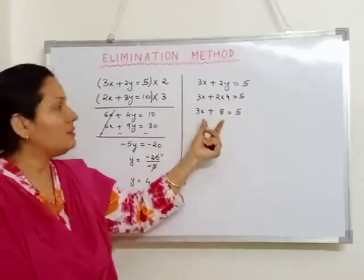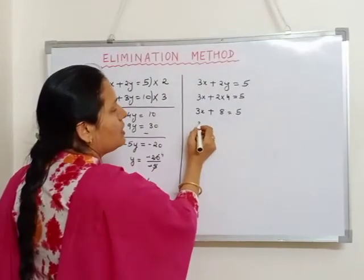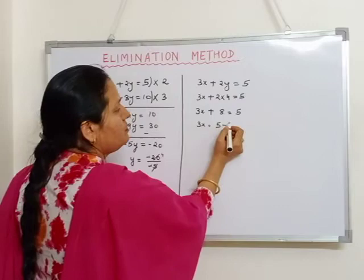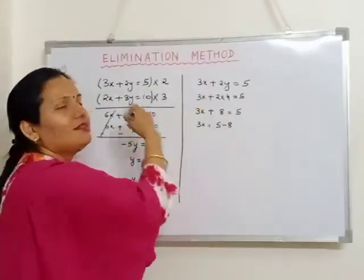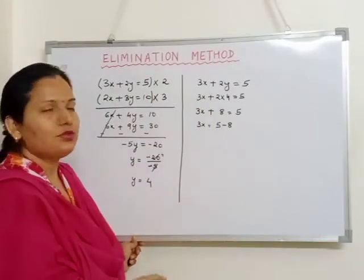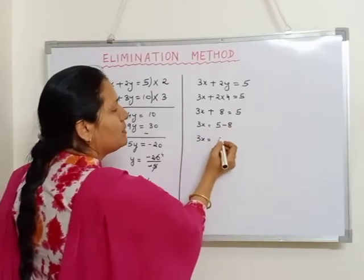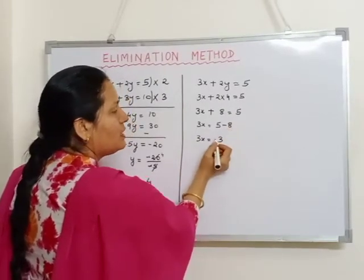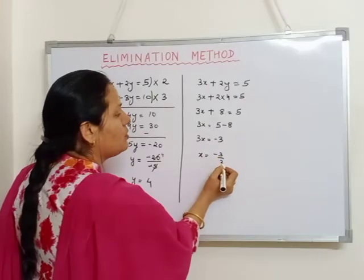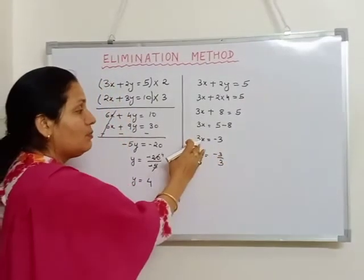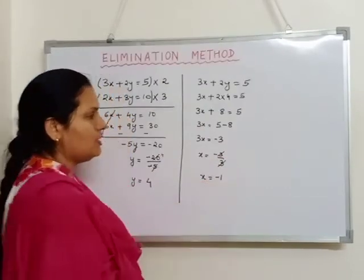Now I have to shift the number to the other side of the equality. That means 3x equals to 5 minus 8. According to the transposition rule, the positive sign changes to negative sign when transposed to the other side. So 3x is equal to 5 minus 8, which is minus 3. Therefore, x will be minus 3 upon 3. Again, multiplication changes to division — 3 and 3 get cancelled. So the value of x will be minus 1.